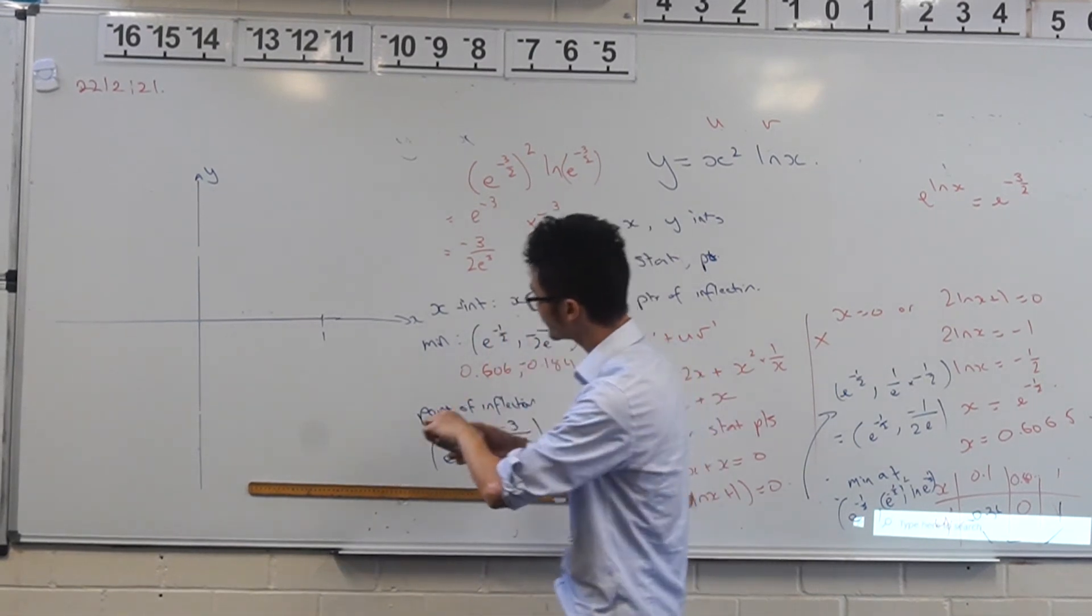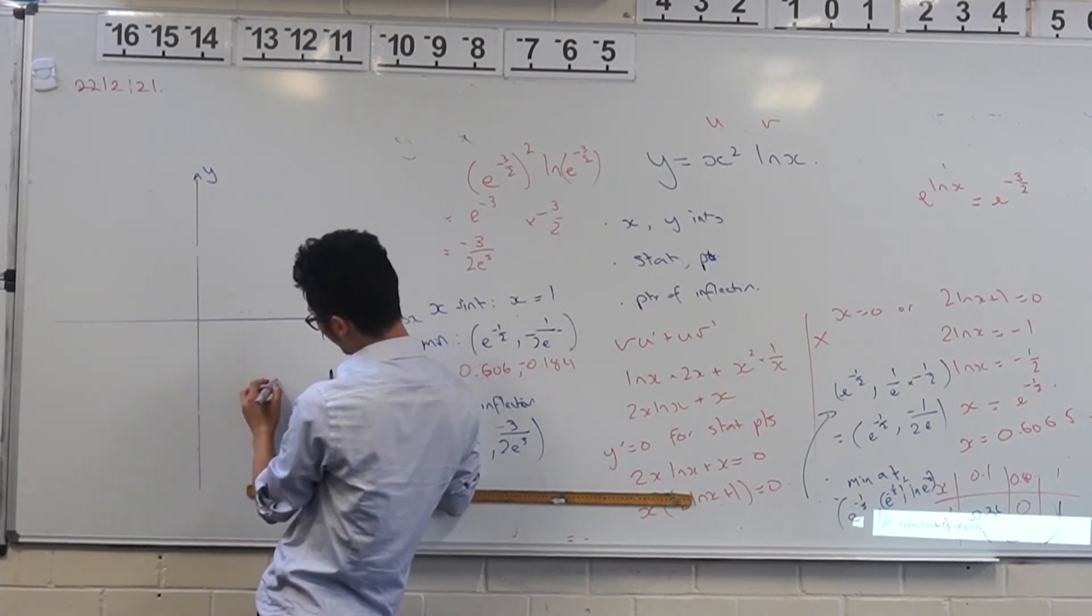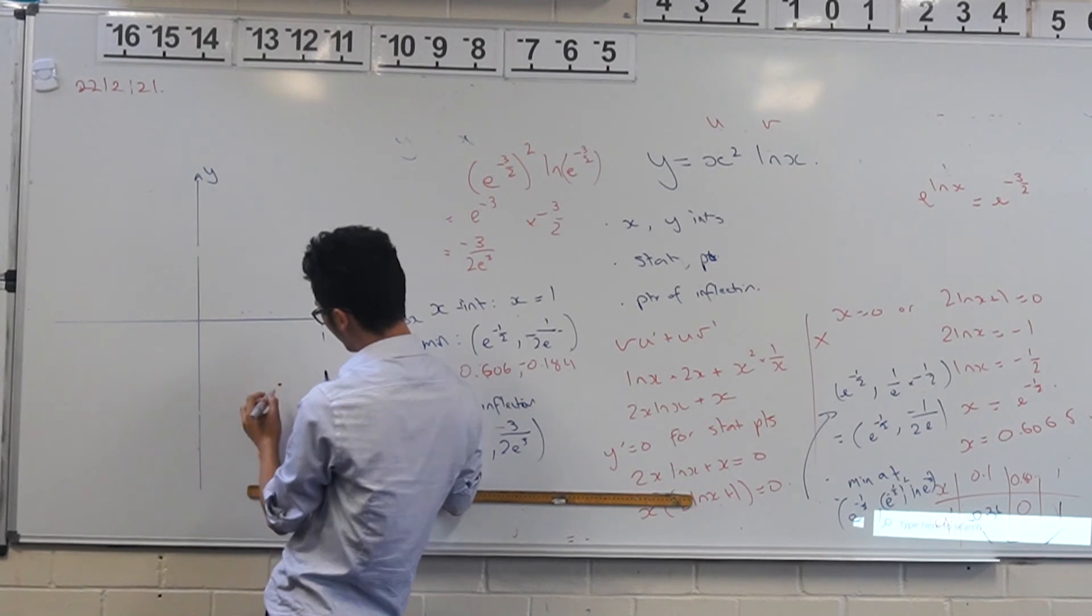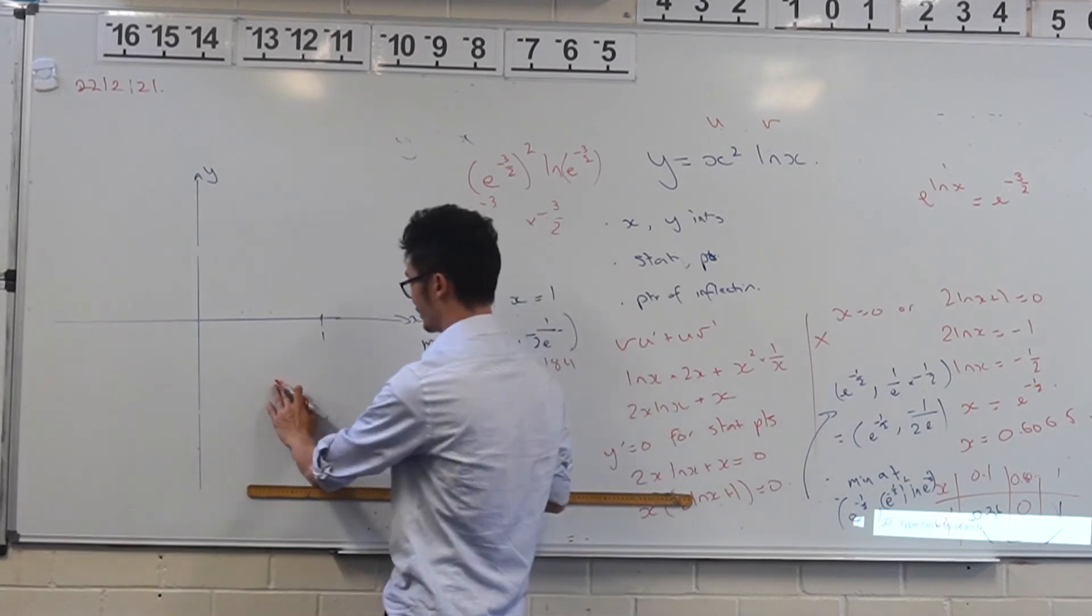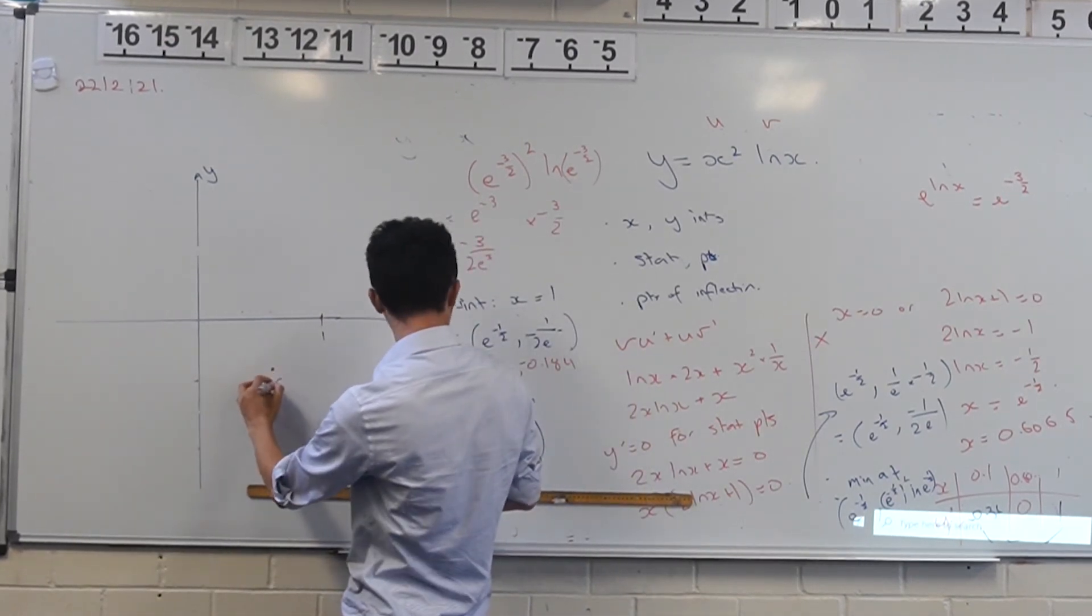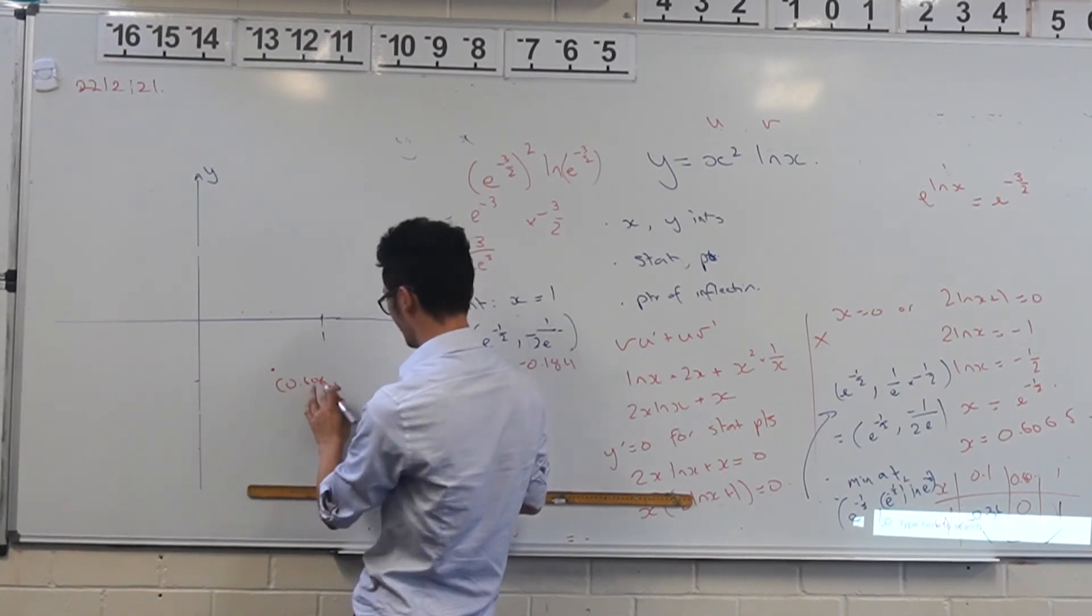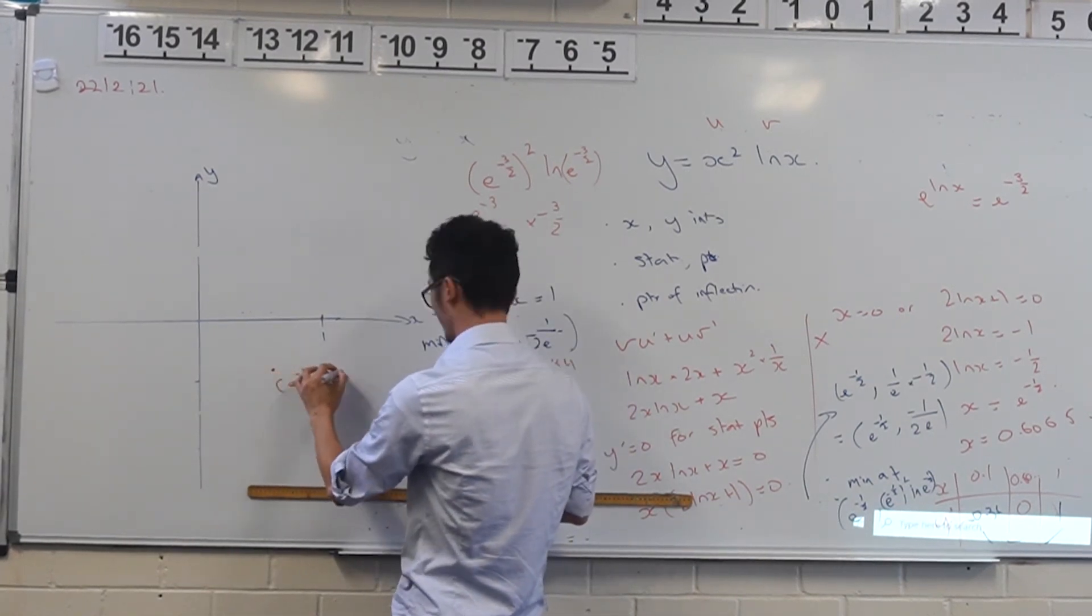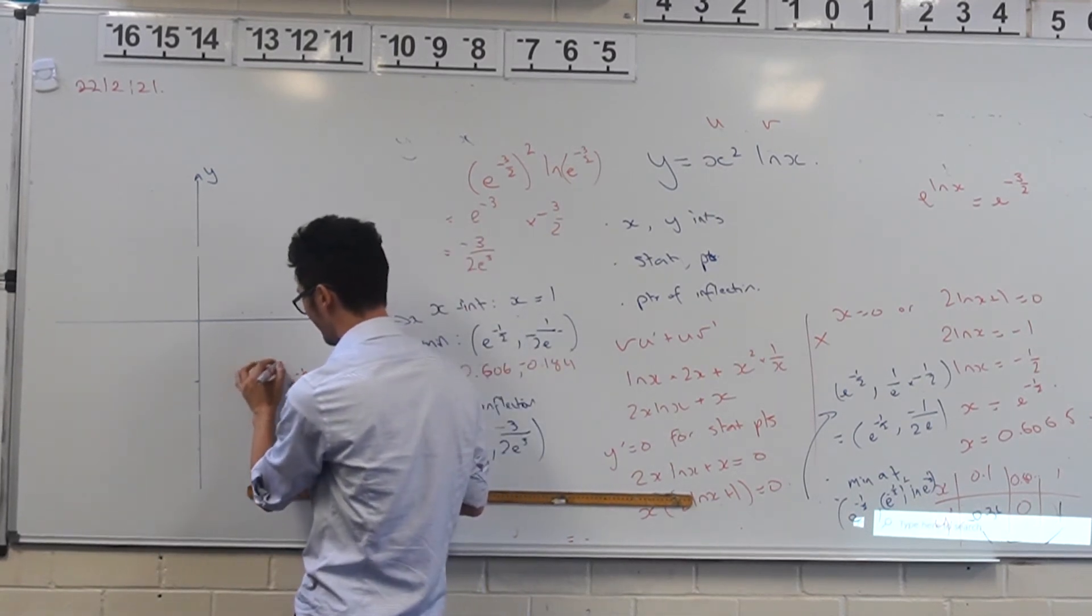So that's going to be a point that exists there, and a point that exists maybe here. Cool. So far, so good. So it's going to be something like this. So this point here is our minimum, 0.606. Well, actually, I should use the exact values here. So e to the negative half and negative 1 over 2e. So far, so good. That's going to be like that, a little bit there.